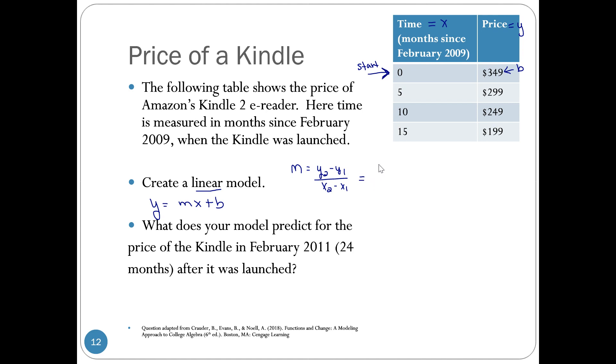Plugging in numbers, my second y value is 299, my first one is 349. My second x value is 5, my first one is 0. So I do the math and I get negative 50 divided by 5, which would come out to negative 10.